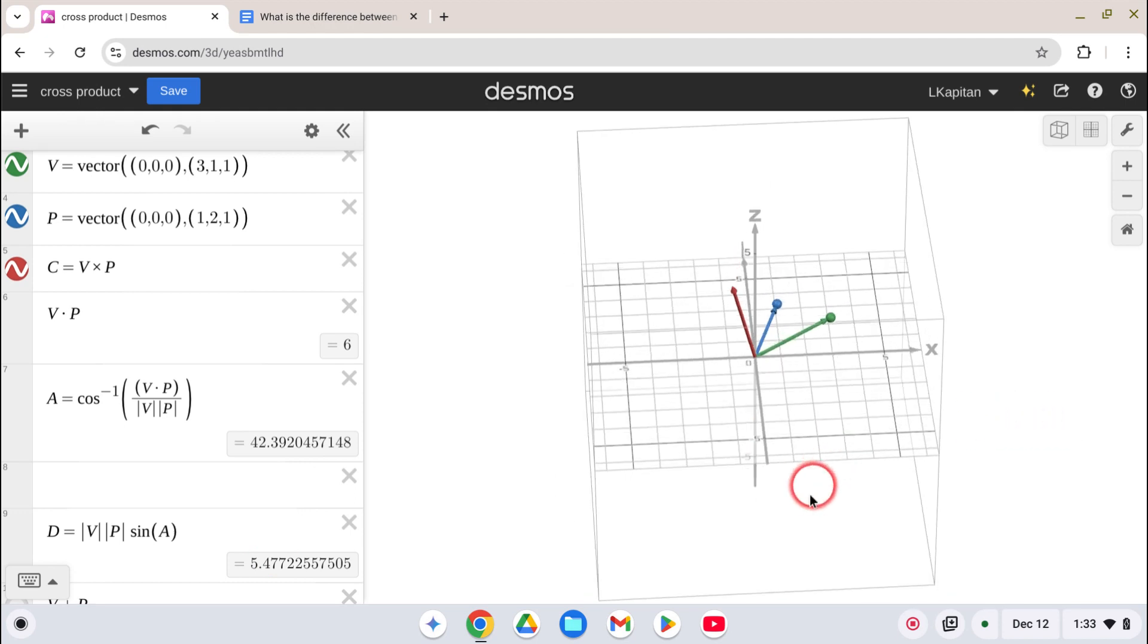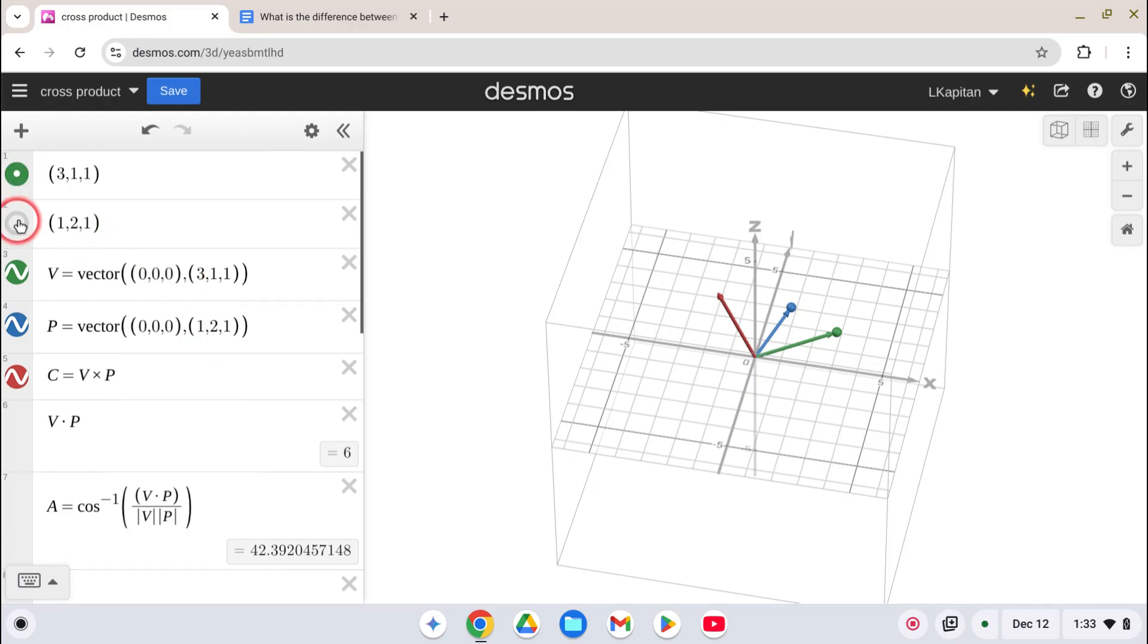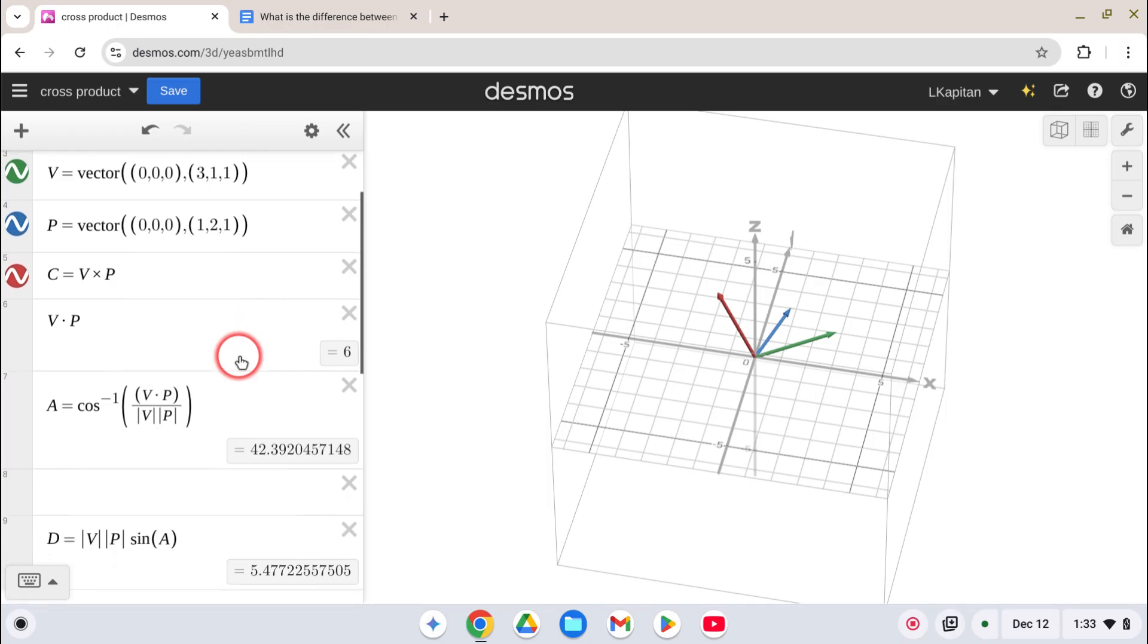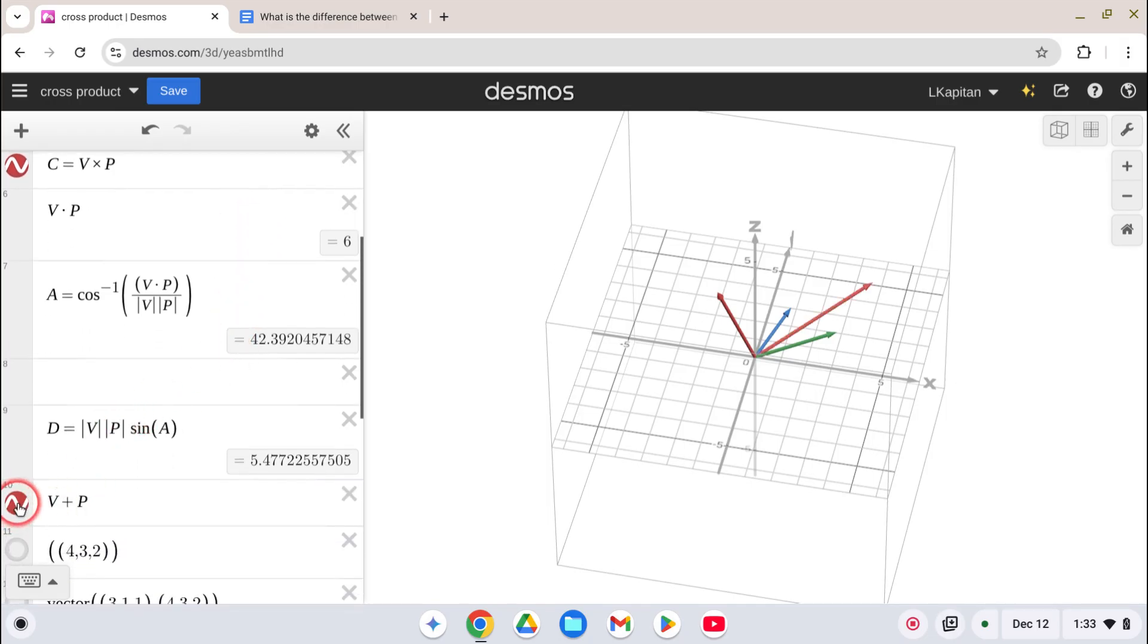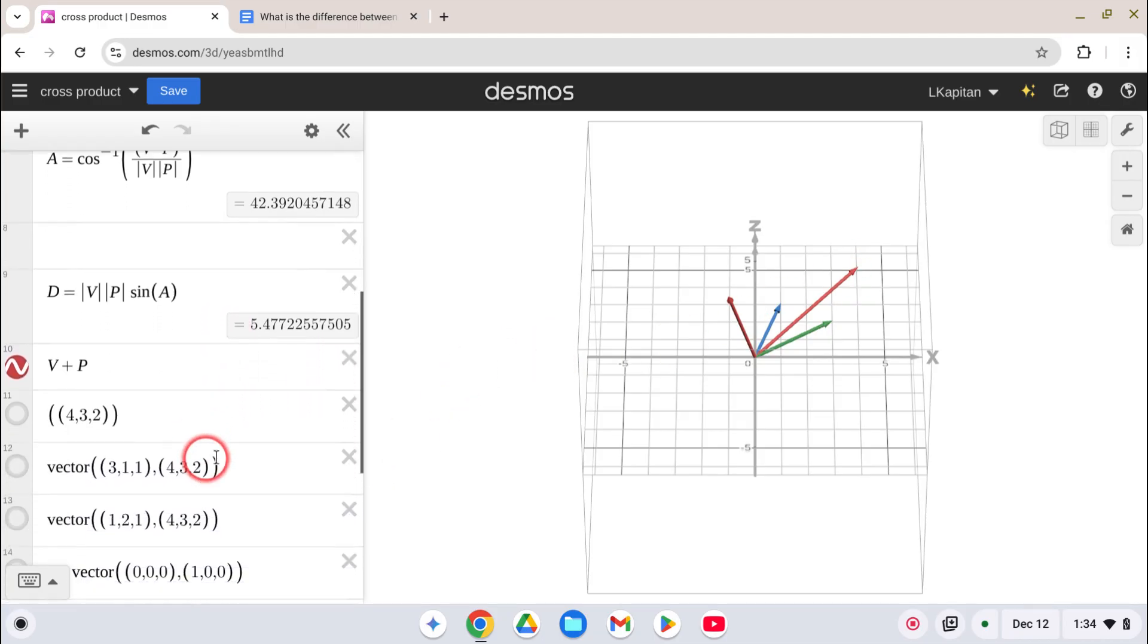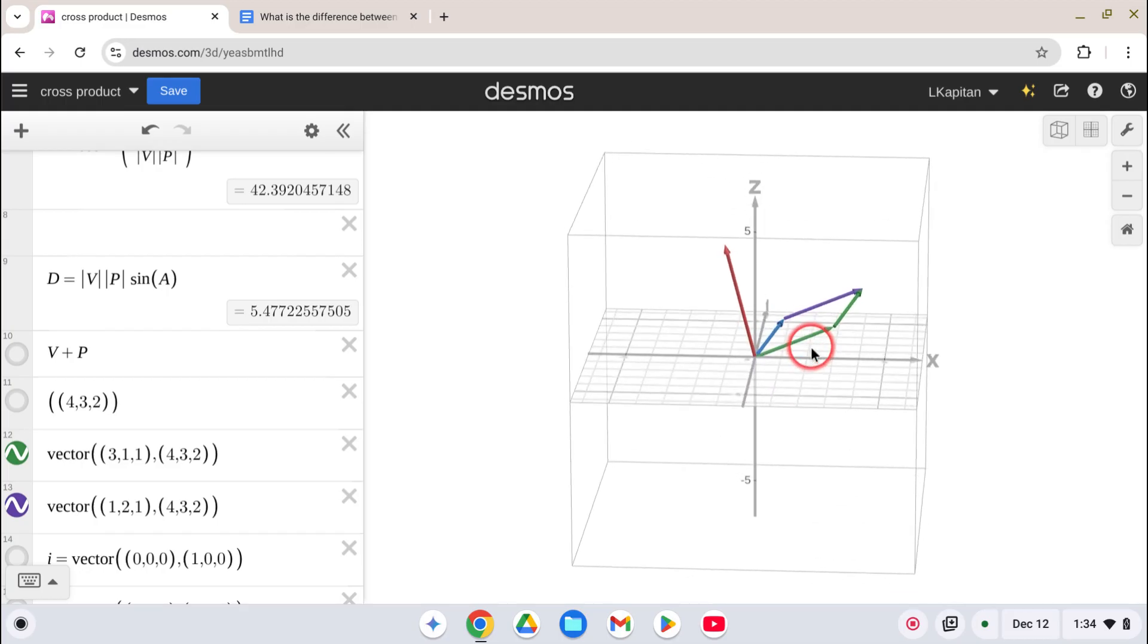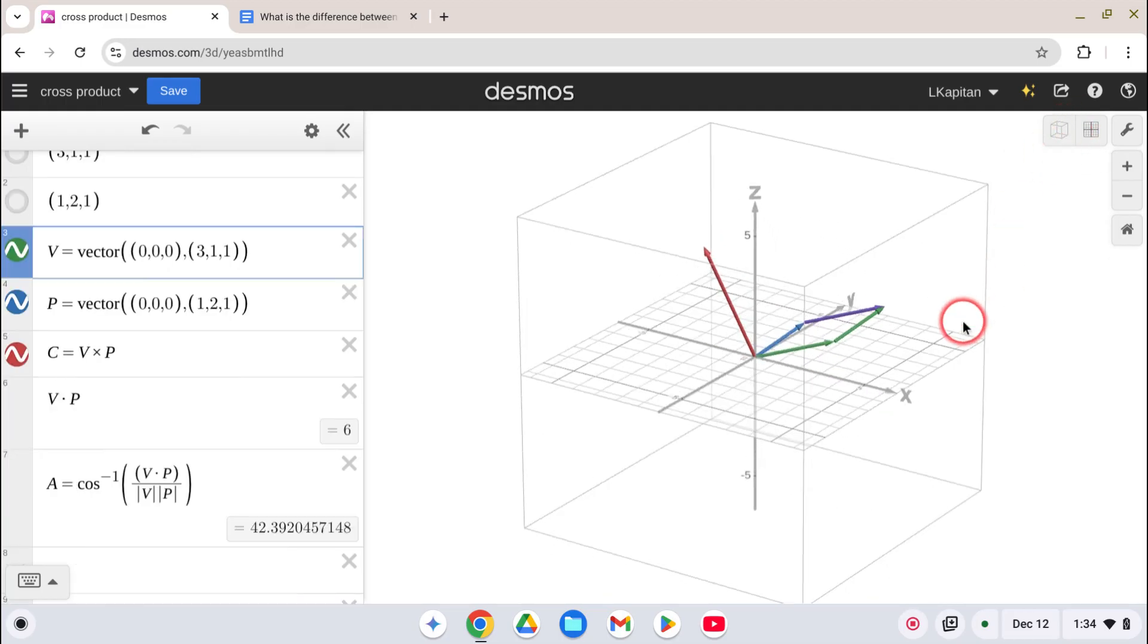Now the other definition that you can do with this, let me get rid of these points because they're kind of bothering me. We can say, what is V plus P? It looks like that. Now we can define a parallelogram by using this as the end of the point, and we get this. So the area of this parallelogram here, this area is also equal to the magnitude of this vector. The area of that parallelogram is equal to the magnitude of that vector.